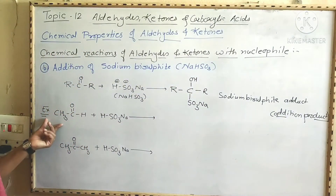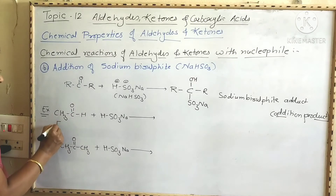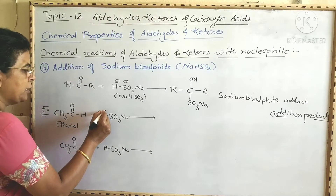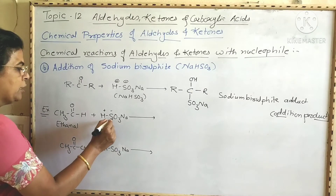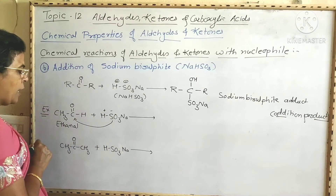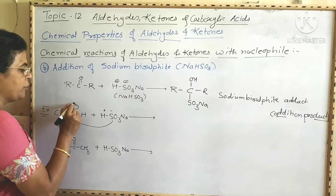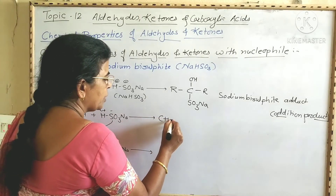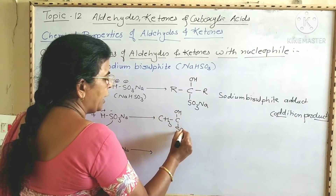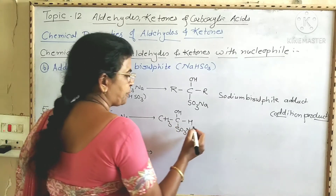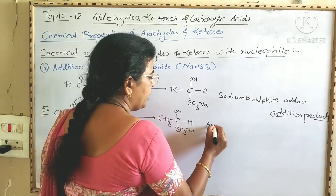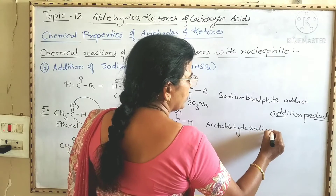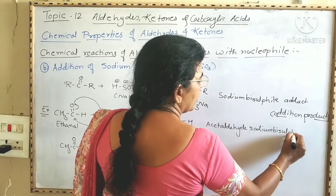For example, this is ethanal or acetaldehyde. When ethanal is treated with sodium bisulfite, the hydrogen is positively charged and SO₃Na is negatively charged. The SO₃Na group gets attached to the carbonyl carbon, then the pi electrons shift onto the more electronegative oxygen atom, and the oxygen then attaches to H⁺, to form CH₃-C(OH)(SO₃Na)-H. This is the acetaldehyde sodium bisulfite adduct.